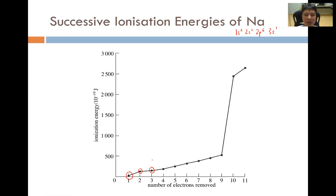The reason successive ionization energies always increase is because when you remove an electron, the number of electrons reduces; however, the number of protons remains exactly the same. For sodium, it has 11 protons and 11 electrons, and all 11 electrons are attracted to the 11 protons. For the second IE, because one electron has already been removed, the remaining 10 electrons are attracted to 11 protons and are more strongly attracted. Hence, the second IE will be higher than the first IE, and so on.